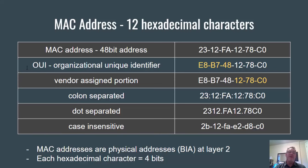The first 6 hex characters is the Organizationally Unique Identifier, which identifies the manufacturer of the NIC. For example, if the first 6 characters of your MAC address are E8B748, you have a Cisco NIC. The last 6 characters is the vendor-assigned portion, which Cisco assigns uniquely to that NIC — no other Cisco Ethernet port should have that same number. MAC addresses can be colon-separated, dot-separated, or dash-separated, and can be uppercase or lowercase. A MAC address is a physical address, also known as a burned-in address at layer 2.